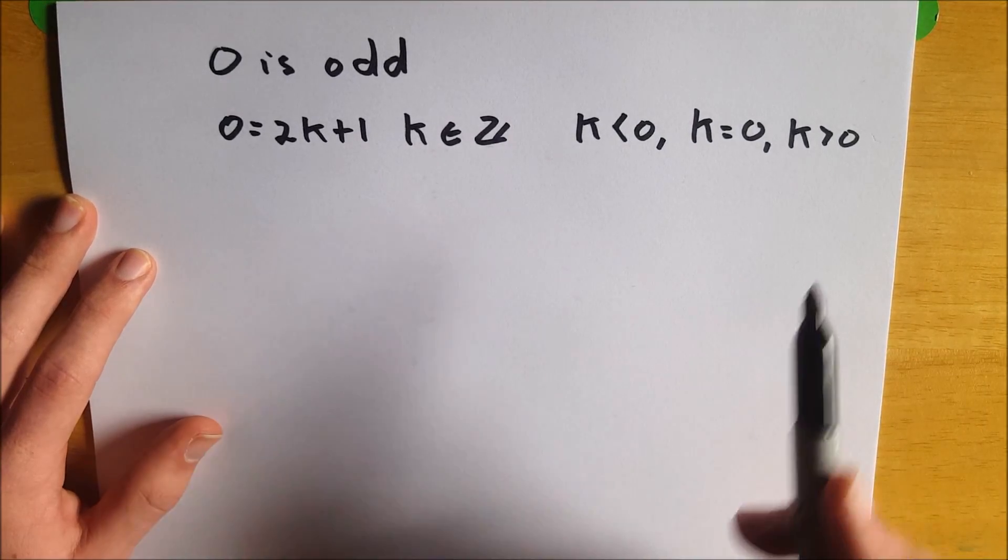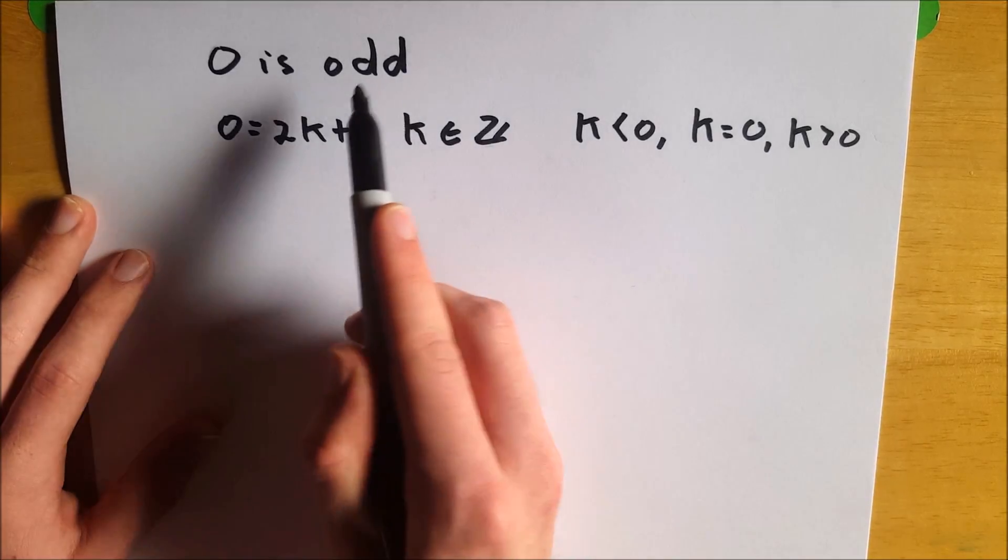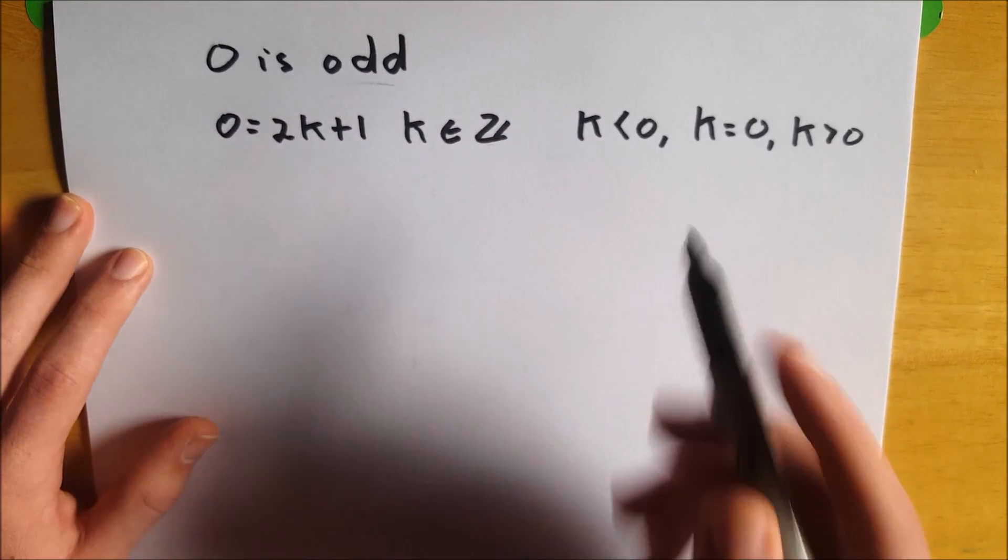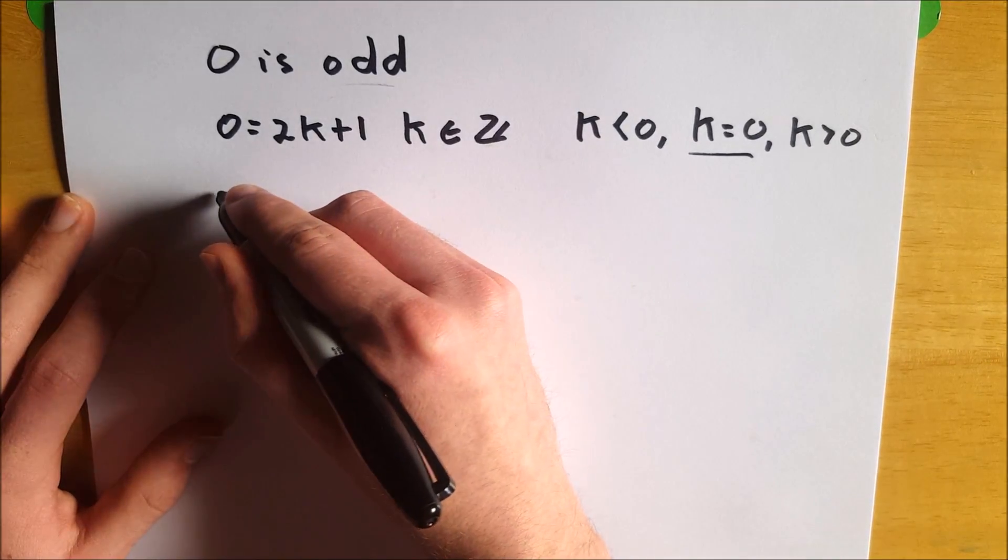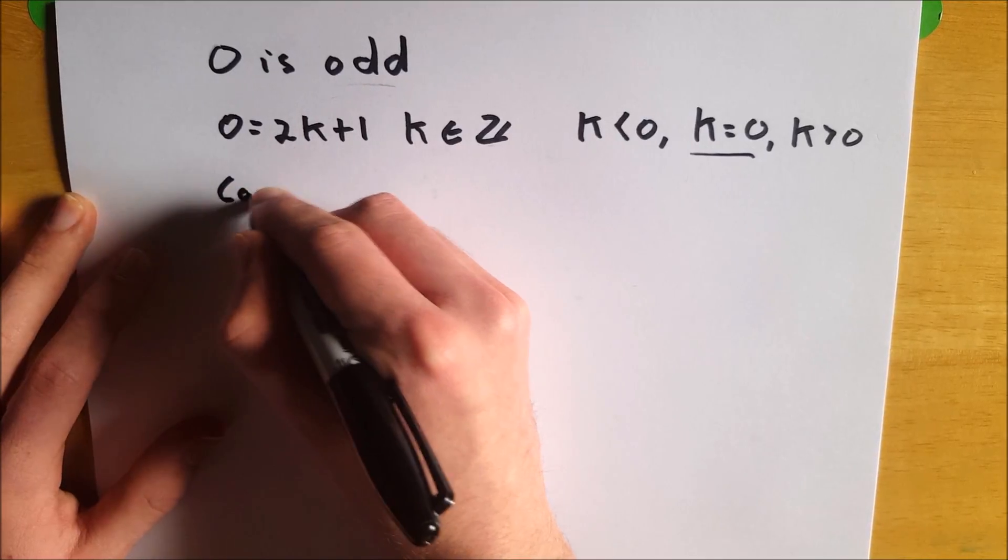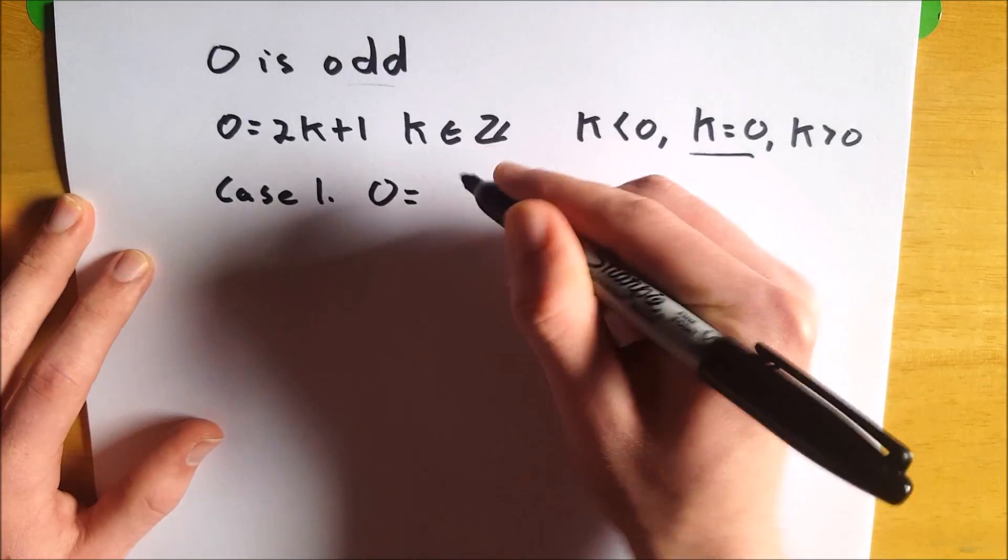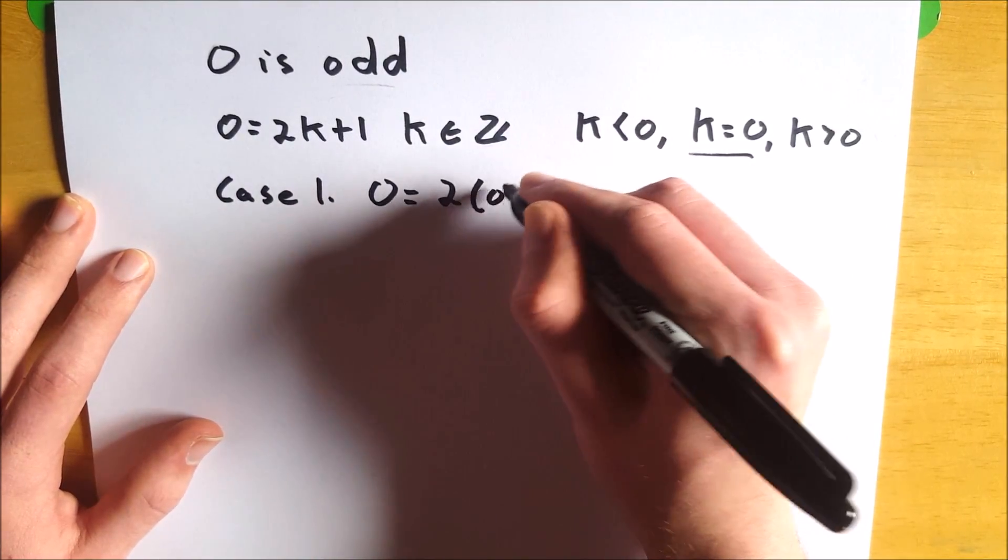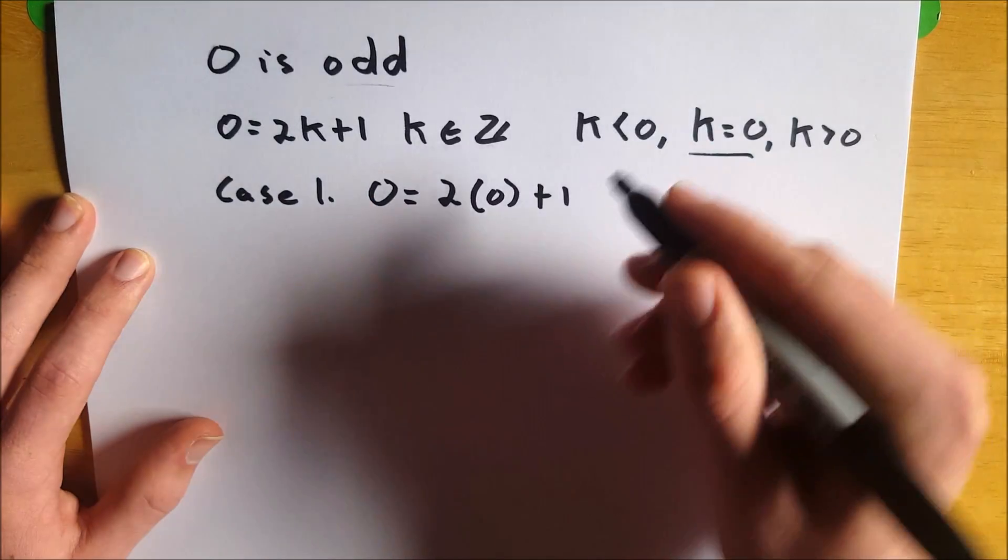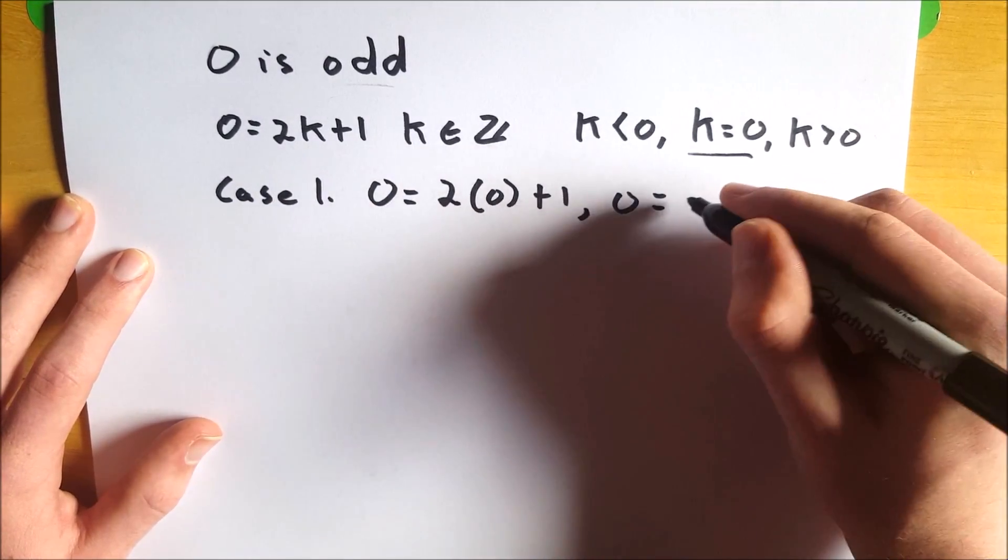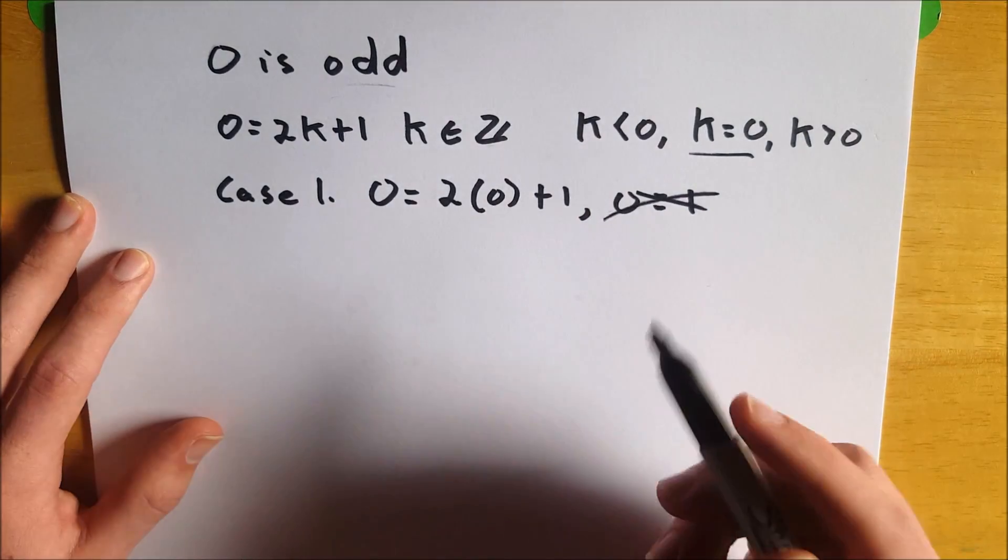Let's just look at these three cases. If we can show that they each lead to a contradiction, then we will have proved that zero is even and not odd. So let's start off with the easiest one, k is equal to zero. If k is equal to zero, then zero equals two times zero plus one, plugging zero into this equation, which would mean that zero equals one. Can't have that, that's a contradiction. So case one is done.